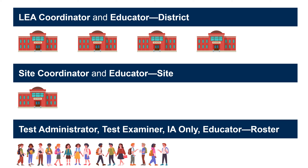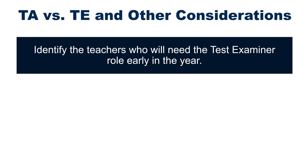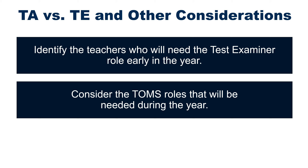Test Examiners administer the California Alternate Assessments while Test Administrators administer the General Assessments. It is recommended that teachers who will need the Test Examiner role are identified early in the year. TEs will need to be set up early in the year in order to administer the CAA for Science, which has a window that opens in September. Consider the TOMS roles that will be needed during the year. If administering Interim Assessments, consider assigning the IA Administrator-only role to any teachers who plan to administer the Interims to start the year. This role allows users to administer Interim Assessments but not Summative Assessments. The IA-only role could be turned into a TA role later in the year once training for the summative test is completed and the test window is approaching.